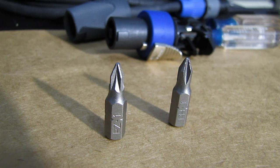Okay, now here you can tell looking at the bits, the one on the left says PZ. It's right on the bit, and the one on the right, you really can't tell, but it says PH on it for Phillips. Both of them are size number one.